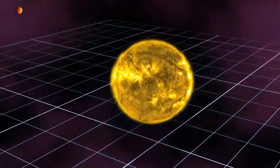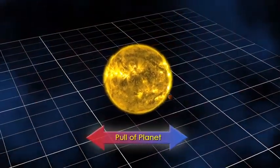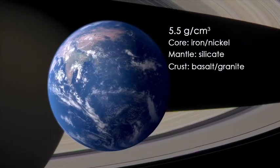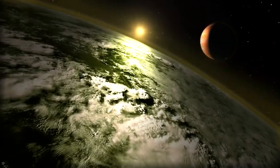By observing an exoplanet's gravitational pull on its star, astronomers can also determine the planet's mass and thus calculate its density to see if it is composed of rock, like Earth, or gas, like Saturn.